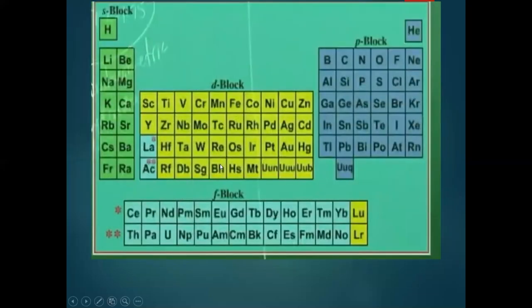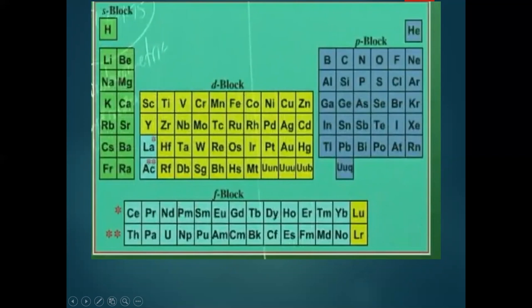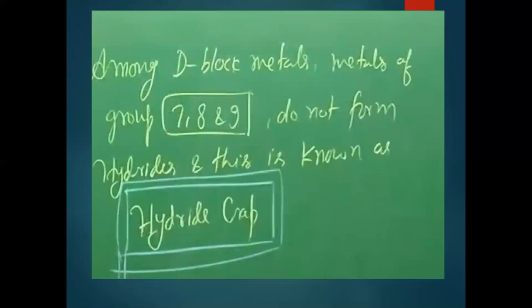Among d-block groups 3 to 12, not all form metallic hydrides. Groups 3, 4, and 5 form metallic hydrides very commonly. In group 6, only chromium forms hydrides. Metals of groups 7, 8, and 9 do not form hydrides at all — this region of the periodic table is referred to as the hydride gap. This is a very important concept to remember.